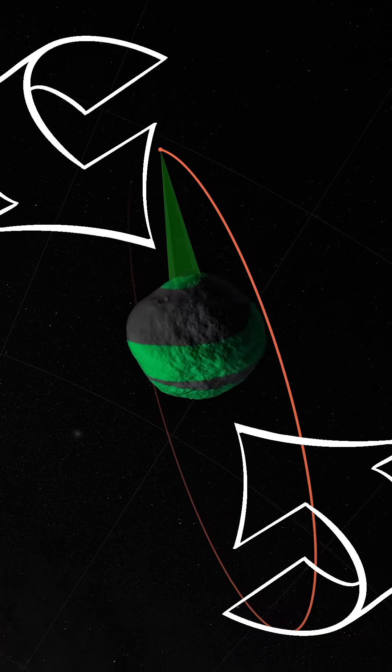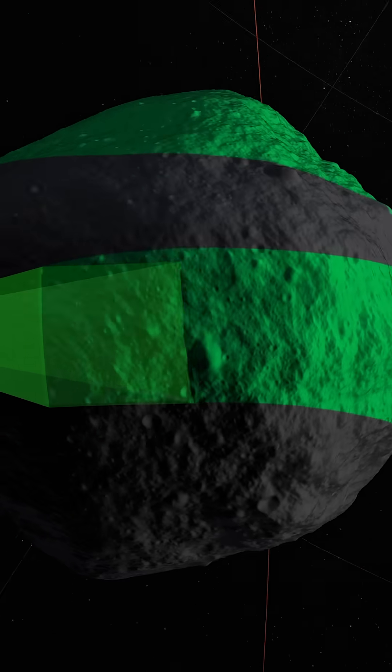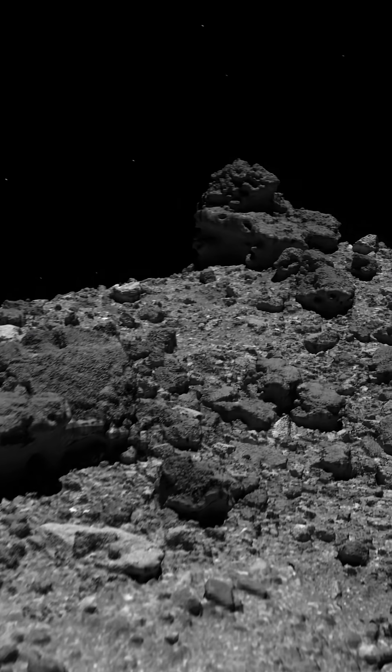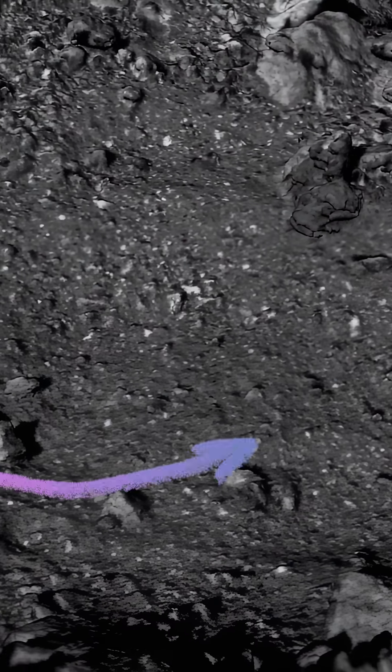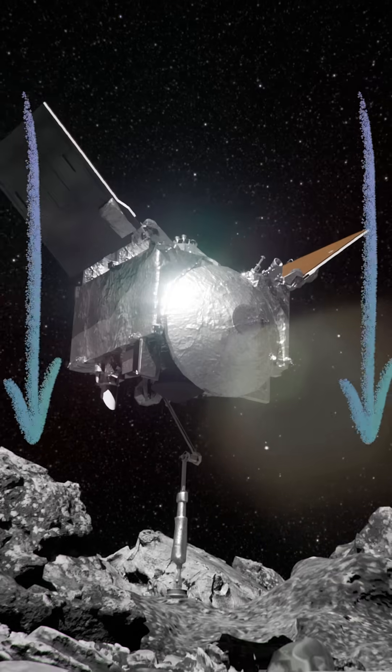At Bennu, OSIRIS-REx orbited the asteroid. We took a bunch of pictures and a bunch of other data to get a sense of what it was like there. And then we found the place on the surface that was the smoothest, had the least big boulders so that we could get the spacecraft to the surface without crashing into anything.